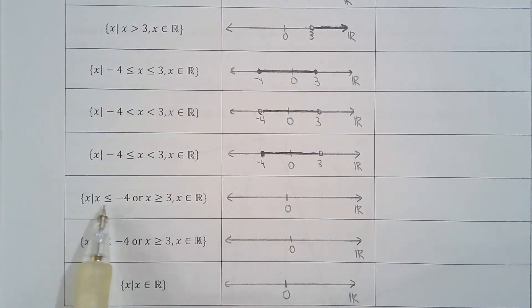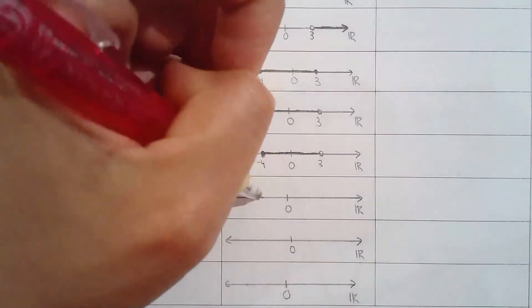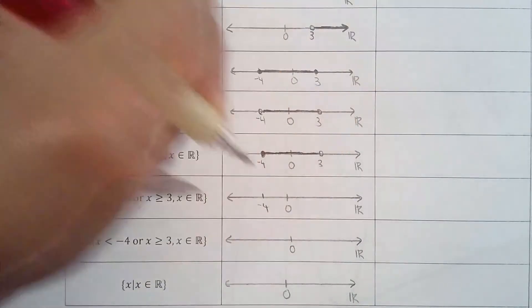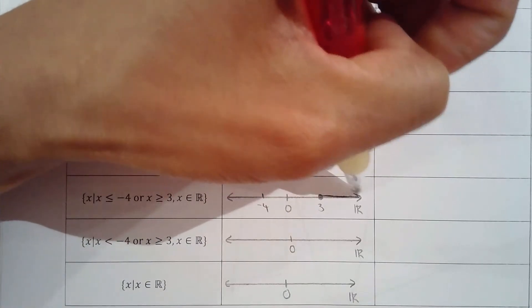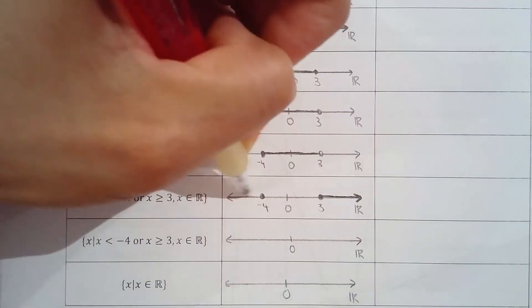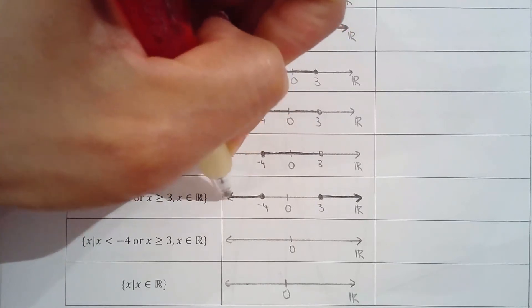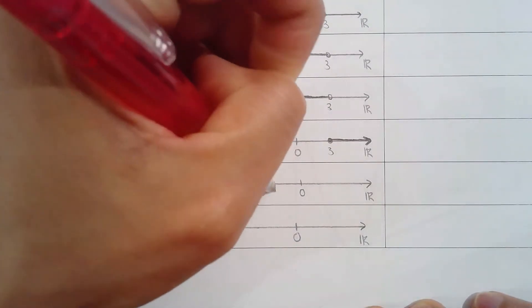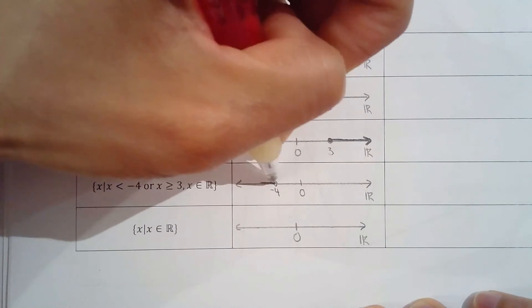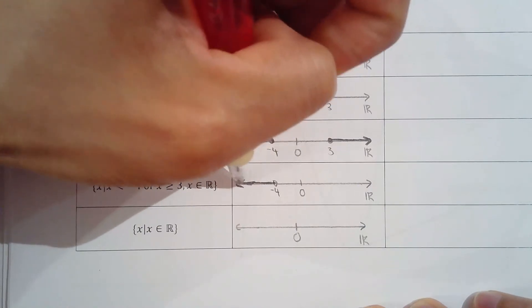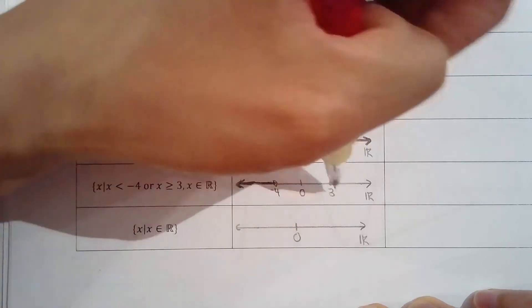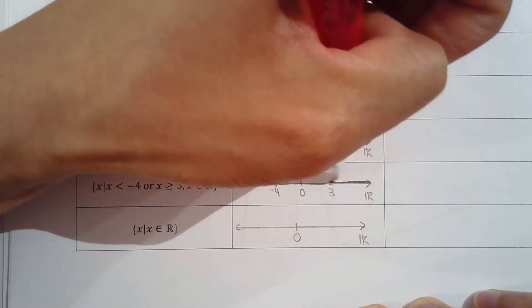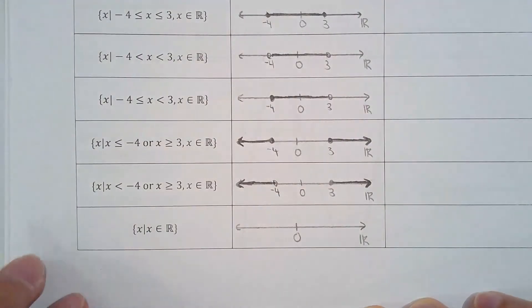x is less than or equal to negative 4, or x is greater than or equal to 3. So less than or equal to negative 4 — include negative 4; and include 3. Don't include negative 4 but do include 3. And what about all real numbers? If it was all real numbers, we highlight the entire number line.